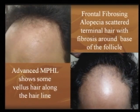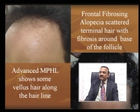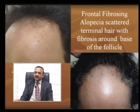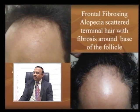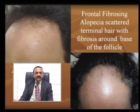Frontal fibrosing alopecia and advanced male pattern baldness may mimic each other. In advanced male pattern baldness you will see villous or miniaturized hair at the receding border, while in the right hand side lower picture you do not see any miniaturized villous or receding pattern along the hairline.